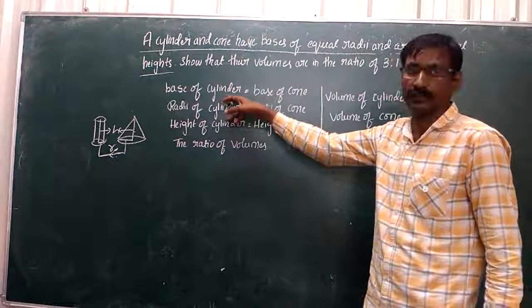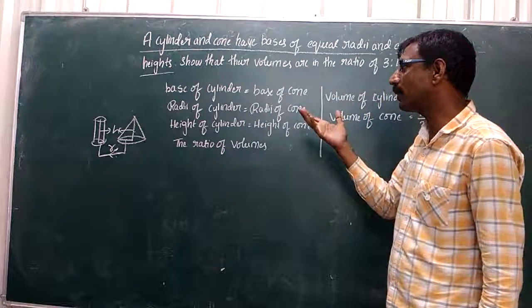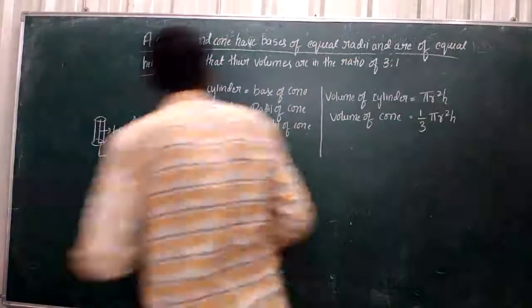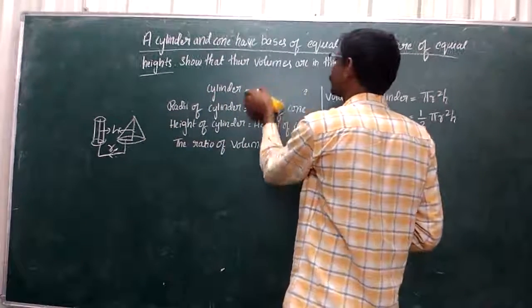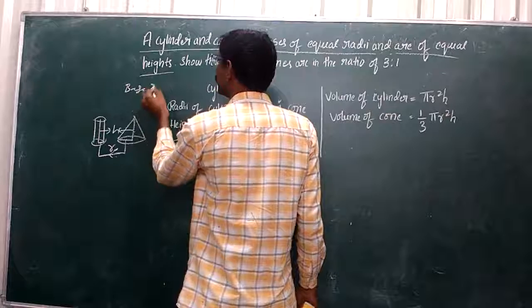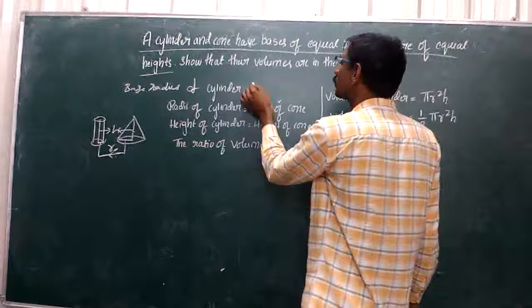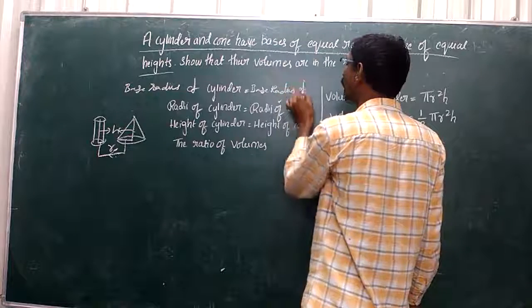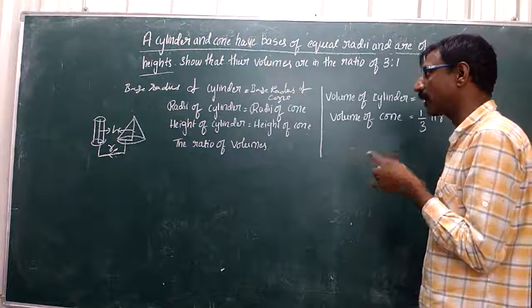The base of the cylinder is equal to the base of the cone. Again, the base radius of the cylinder is equal to the base radius of the cone.